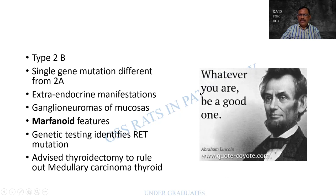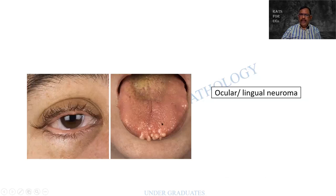The marfanoid features are well described in Robbins — this itself can be a question. There can also be neurofibroma or mucosal neuromas. This image shows a tongue with multiple nodules found to be neuromas or ganglia neuromas. In the eye there is a thickening due to an ocular neuroma.